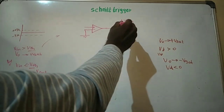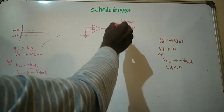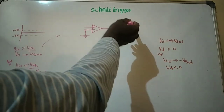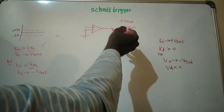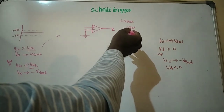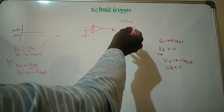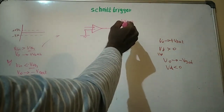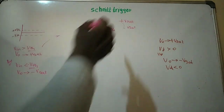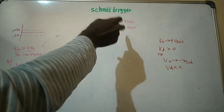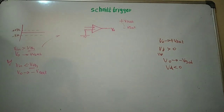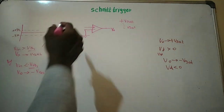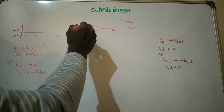So for a positive feedback, you will have only two states — it will be either plus Vsat or minus Vsat. You won't get any voltage between these two. So only two levels you can get from positive feedback. Now we will see how to build the Schmitt Trigger with the positive feedback.